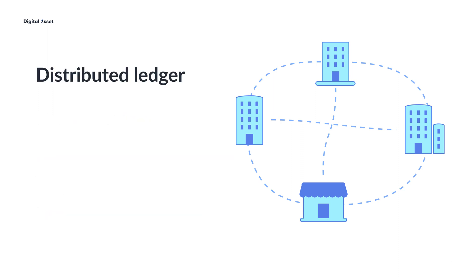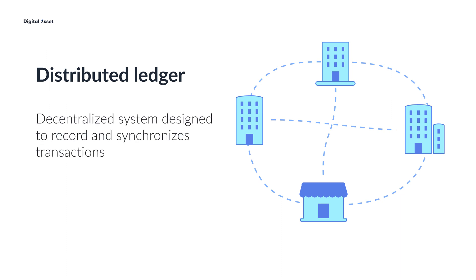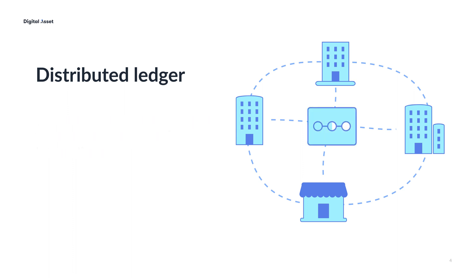A distributed ledger is a decentralized system designed to record and synchronize transactions across multiple servers, databases, or systems. It provides transparency, immutability, and security through a network of participants who validate and maintain a ledger's integrity. There are many types of distributed ledger, but the core purpose for all of them is to ensure that transactions are recorded in order.